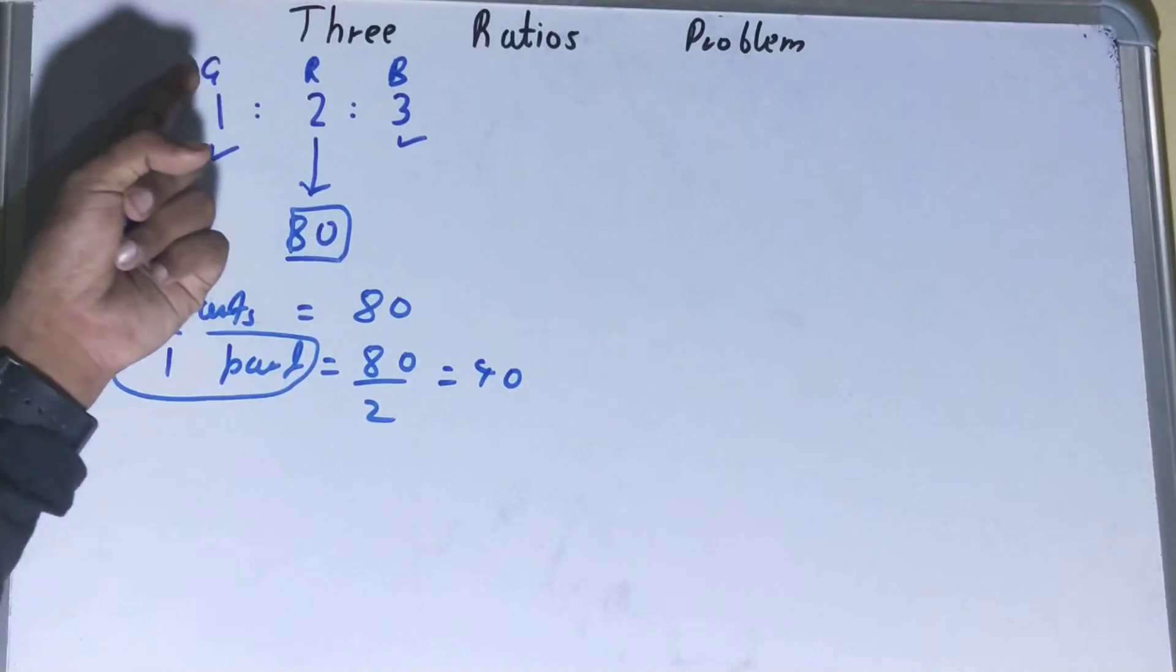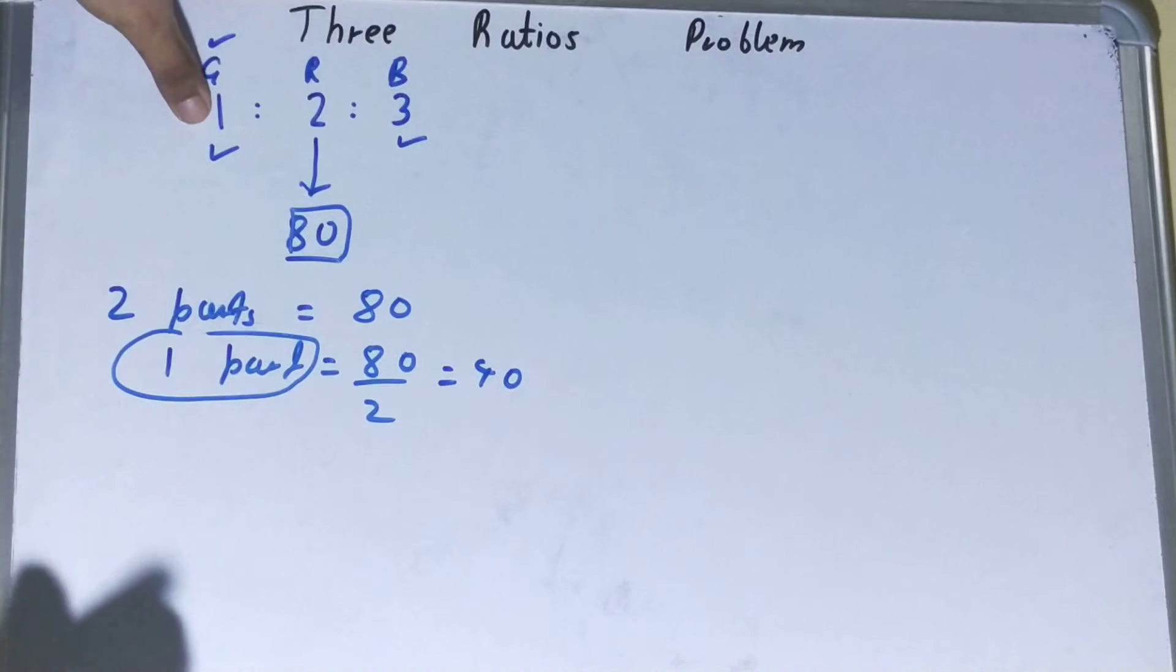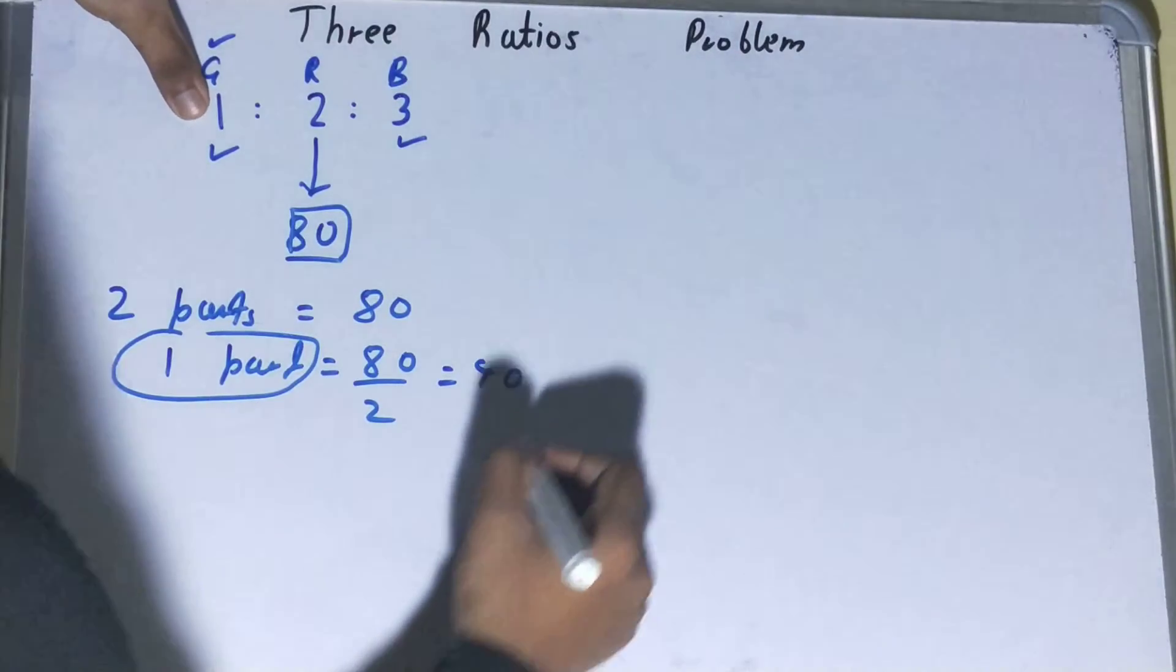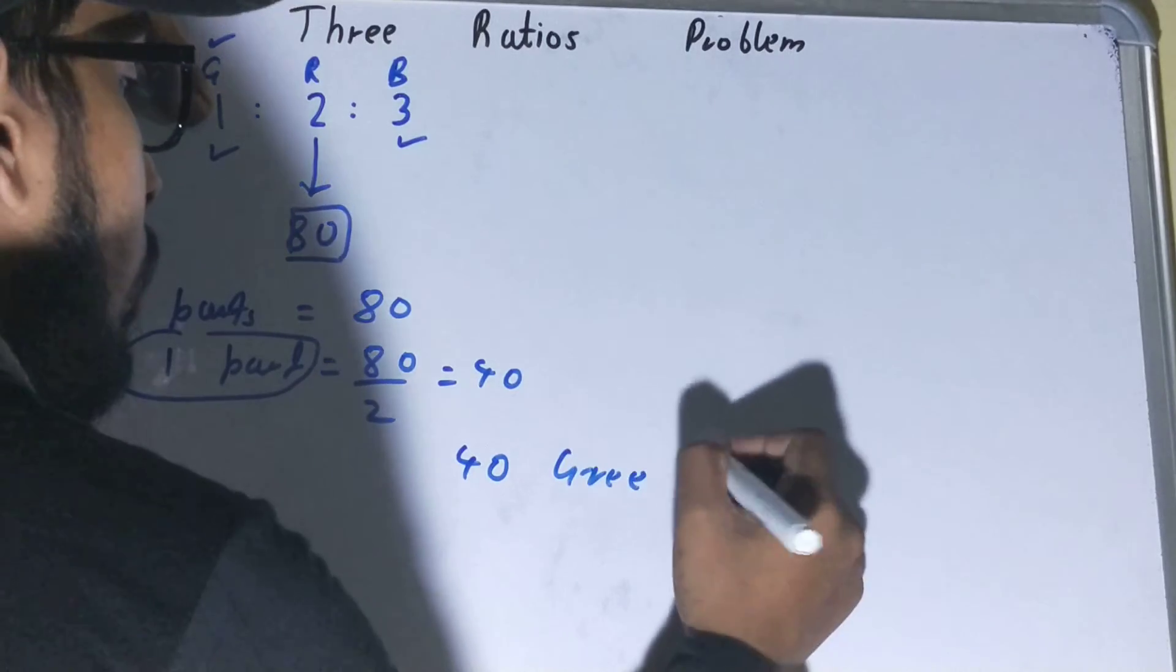So for green, we have one part in the ratio, right? So we can say 40 green balls.